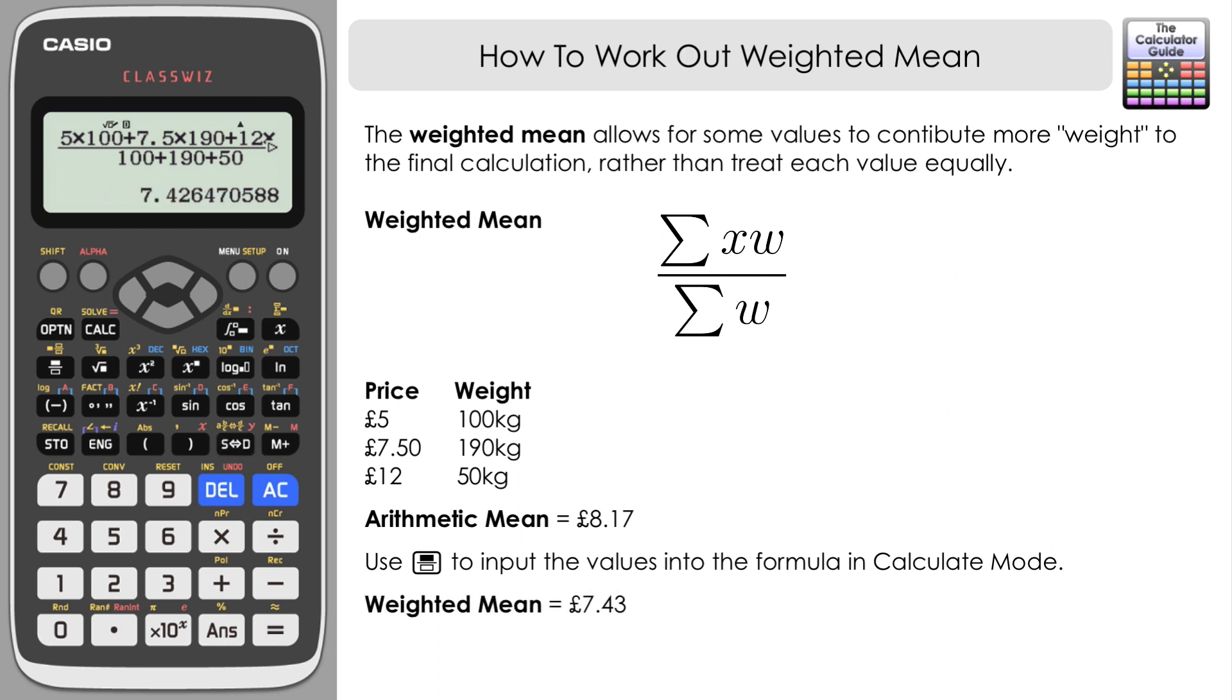Let's press SD and here we have our weighted mean: £7.43 to two decimal places. You can see that seems more realistic when we've sold substantially more of the £7.50 product and then a fair amount of the £5 product. We'd expect it to be maybe about £7.50 or a little bit less, and that's what we've got. This is obviously a better measure of the average price of the goods sold than the arithmetic mean would be. In these circumstances we'd be better off using the weighted mean.